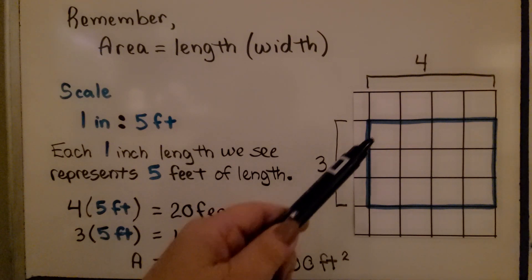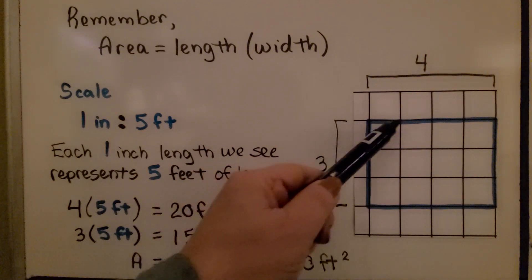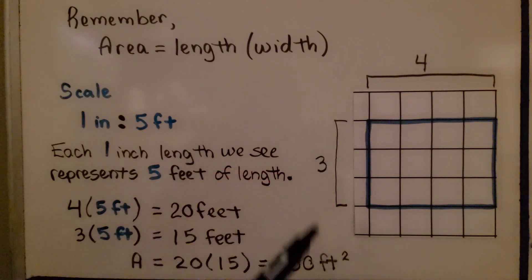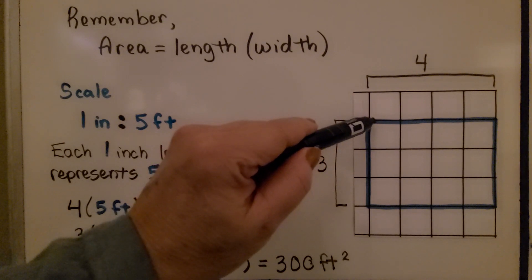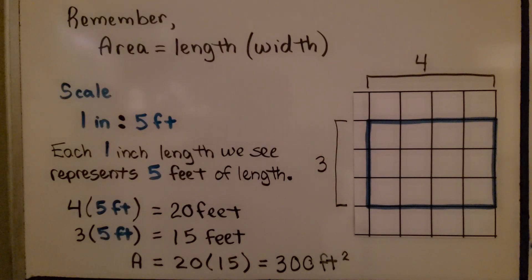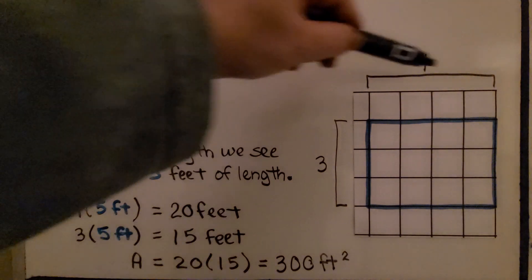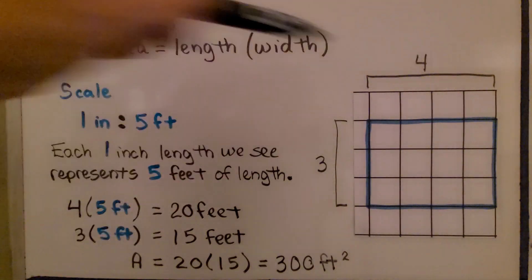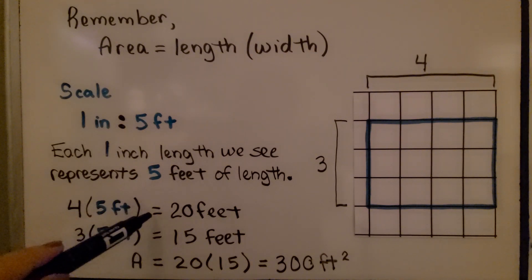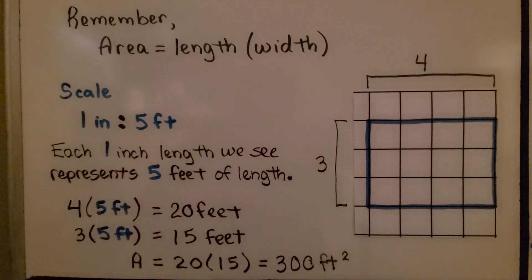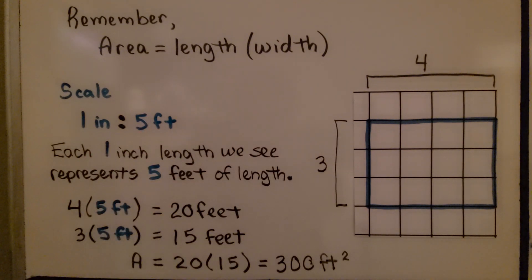The scale for this rectangle is one inch to five feet. That means each one inch length is equal to five feet — it represents five feet of length. If we have four inches for our length, we multiply by five feet and get twenty feet. The side has three inches; we multiply by five feet and get fifteen feet.